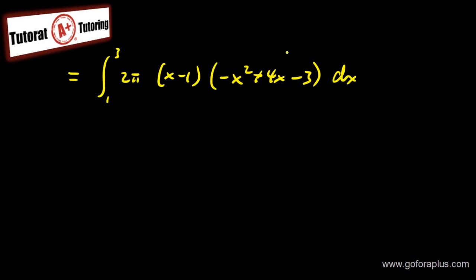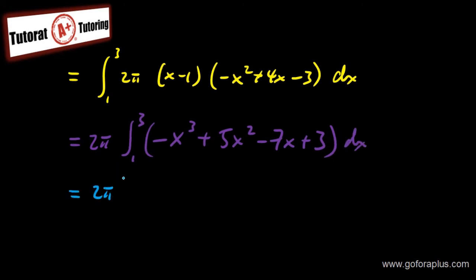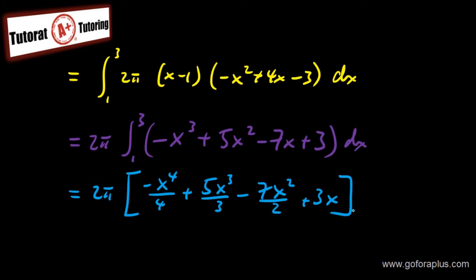Now, I need to multiply this bracket out so that it will be easier to evaluate the integral. I'll take out the 2 pi, 1 to 3. If I multiply it out, it will give me minus x cubed plus 5x squared minus 7x plus 3. Now, you do the integral of this, which is easy. 2 pi in front. And then I have minus x to the 4 over 4 plus 5x cubed over 3 minus 7x squared over 2 plus 3x from 1 to 3.